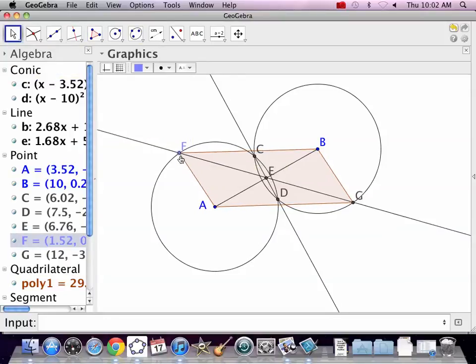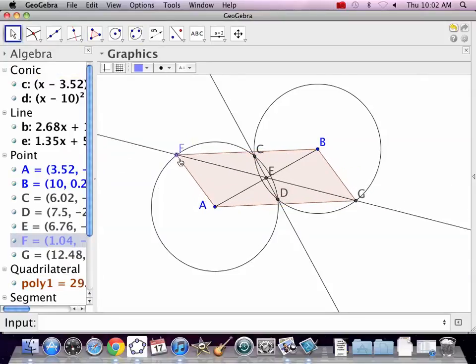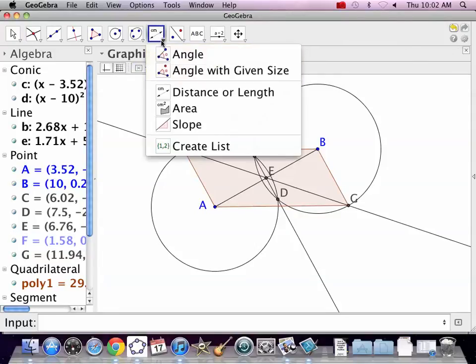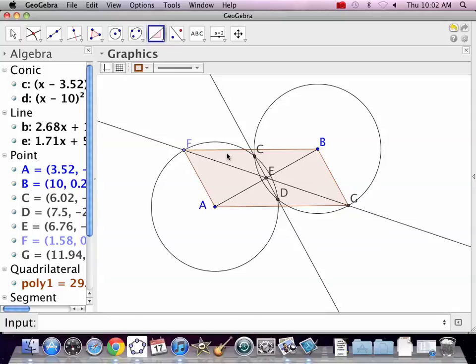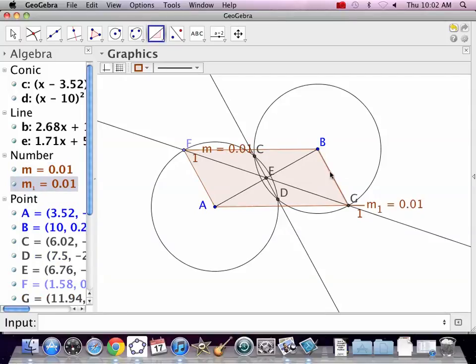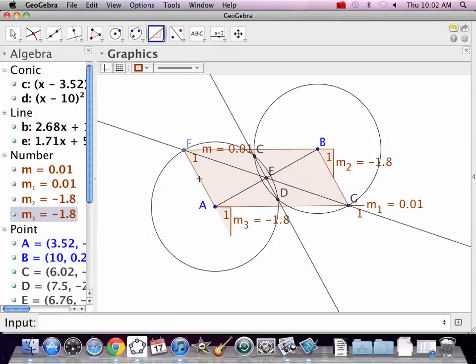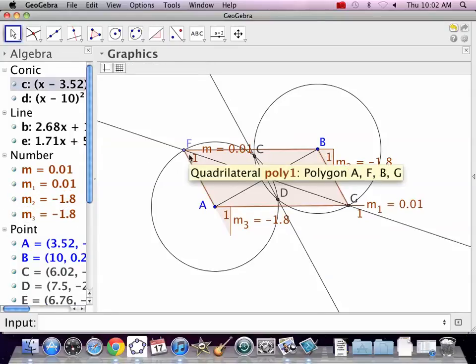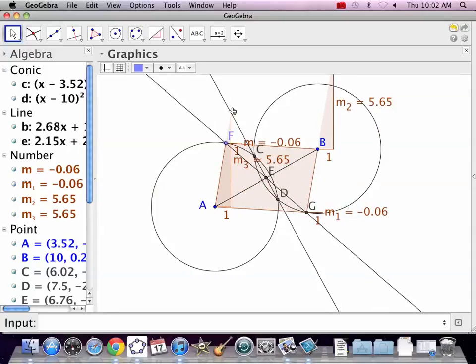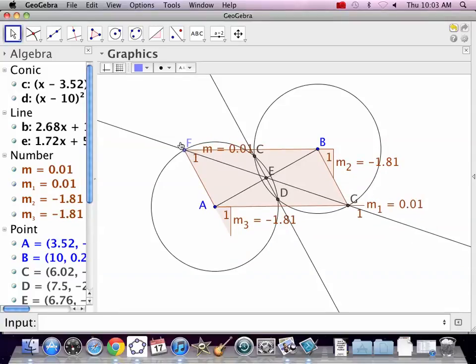But this works also, no matter where you put that parallelogram. Don't believe me? Well, we'll measure the slopes. Maybe we'll measure. Oh, yeah. 0.01. Slopes are the same. Two sets of parallel lines. 565, 565, negative 06, negative 06, 181, 181, 0101.